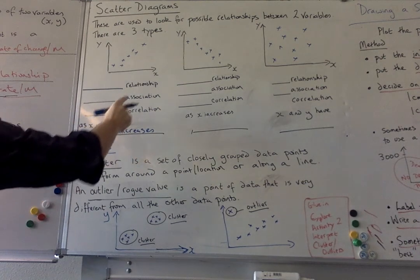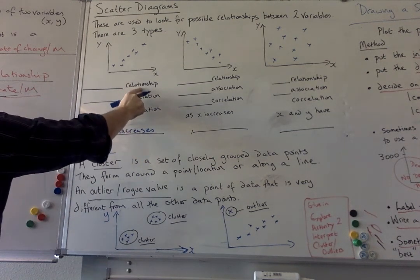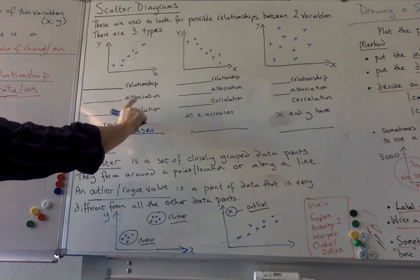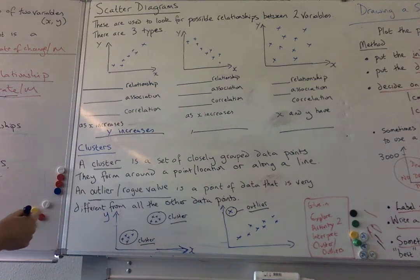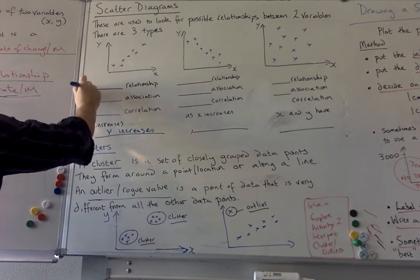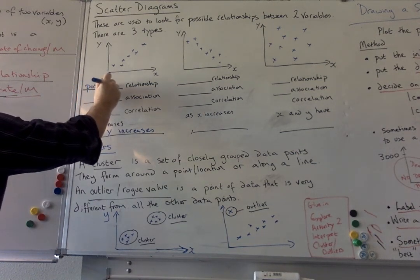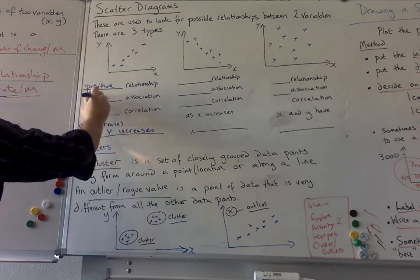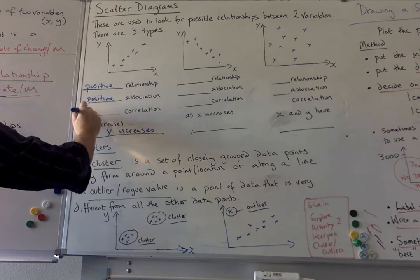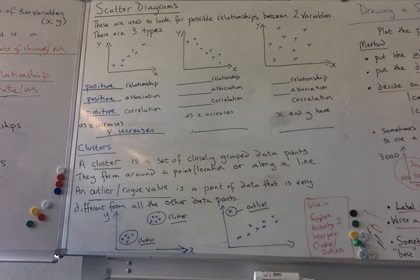So what we call this, there's three different words sometimes you sometimes say relationship in the Go Maths book that we're using they use the word association sometimes we use the term correlation which is more high school but what we've got is a positive relationship or a positive association or it's called a positive correlation.